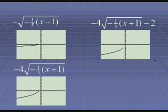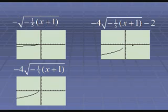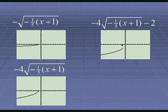Notice how the domain changes through the transformations. At the end, your domain is negative infinity up to negative 1, because when x is 0, 1, 2, or 3, there's no graph there — the graph starts at x = negative 1. You can verify: plugging in x = negative 1 gives negative 1 plus 1 equals 0, times 1/5 is 0, negative 0 is still 0, and you can take the square root of 0. To find the domain, set the expression under the square root equal to 0 and solve.